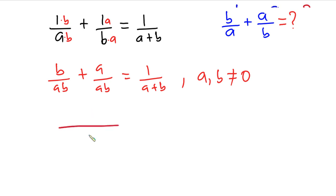I'll write one of the denominators as the LCM then sum the numerators. So we have a plus b over ab, and this is equal to 1 over a plus b.